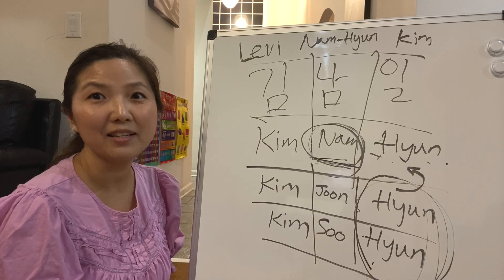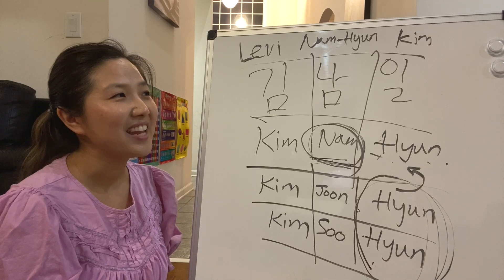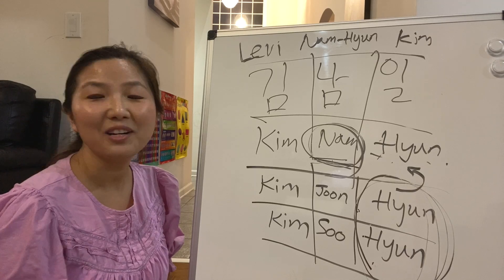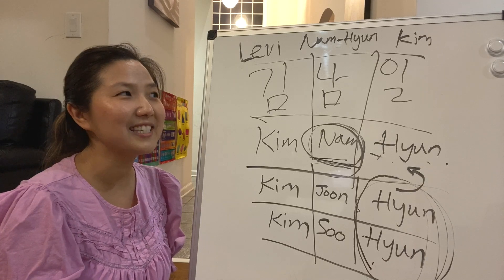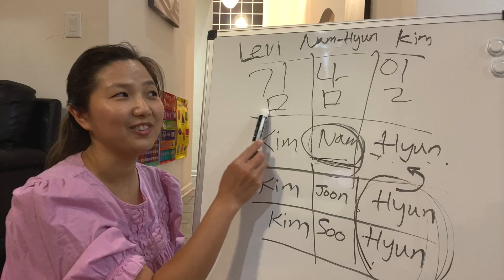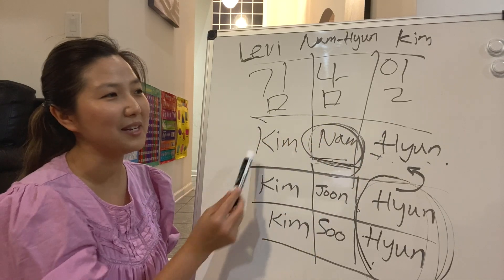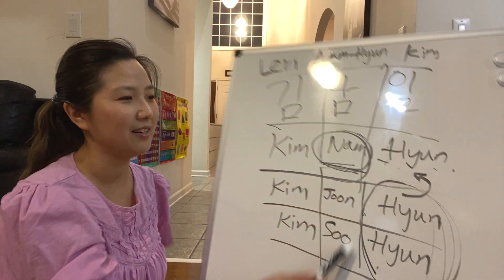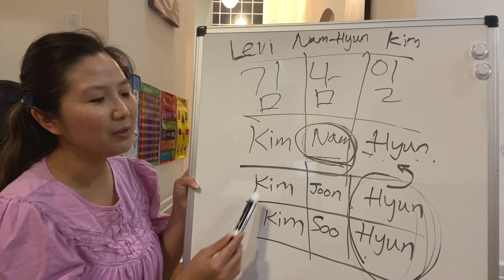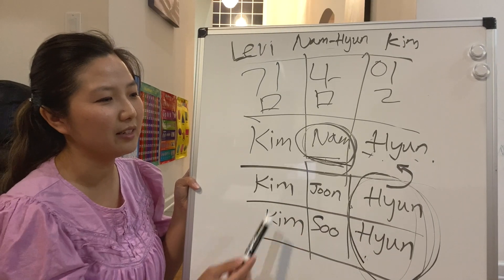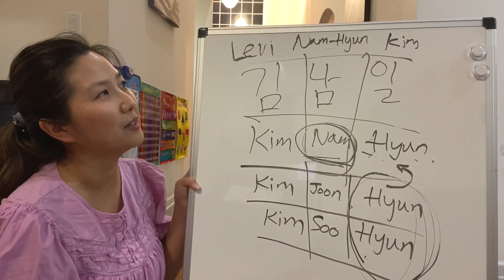When you adopt a baby from Korea, you will see that their name is three syllables — like Kim Nam-hyun, Kim Joon-hyun, Kim Soo-hyun. It's always three syllables in Korean.